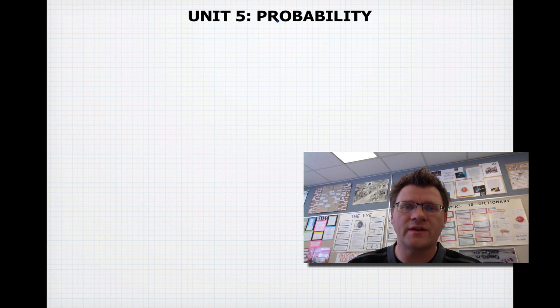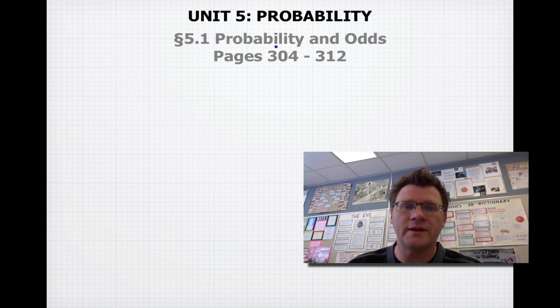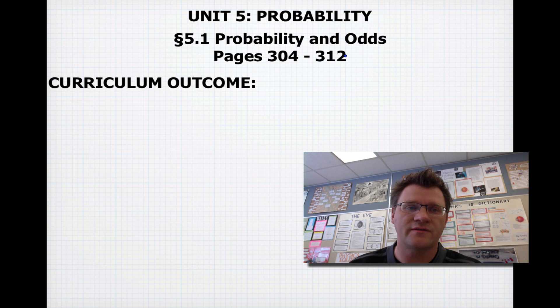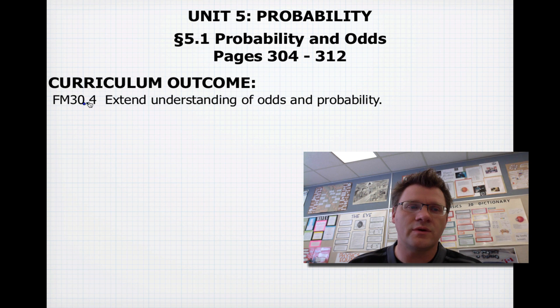We're starting unit 5 today, which is probability, and we're looking at 5.1, which is probability and odds, on pages 304 to 312 in your text. Our curriculum outcome is to extend understanding of odds and probability.